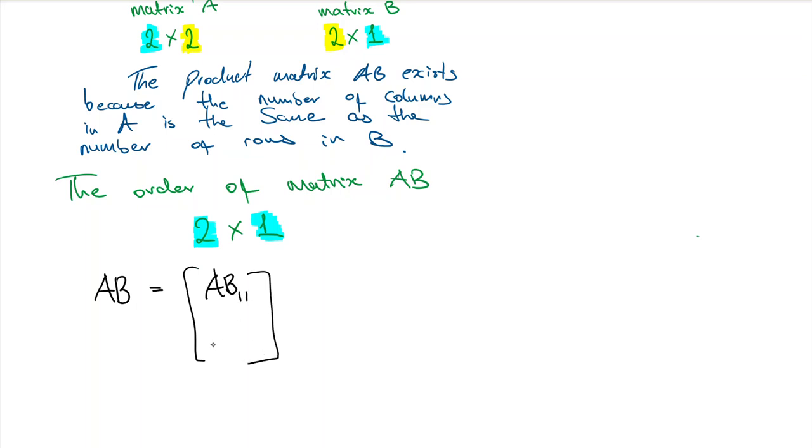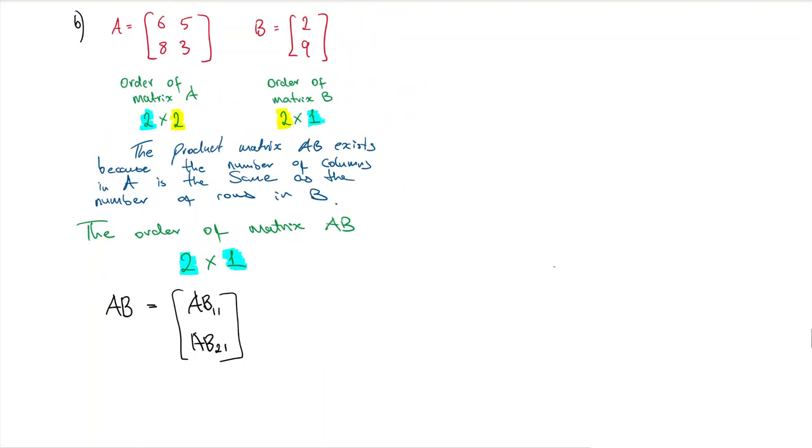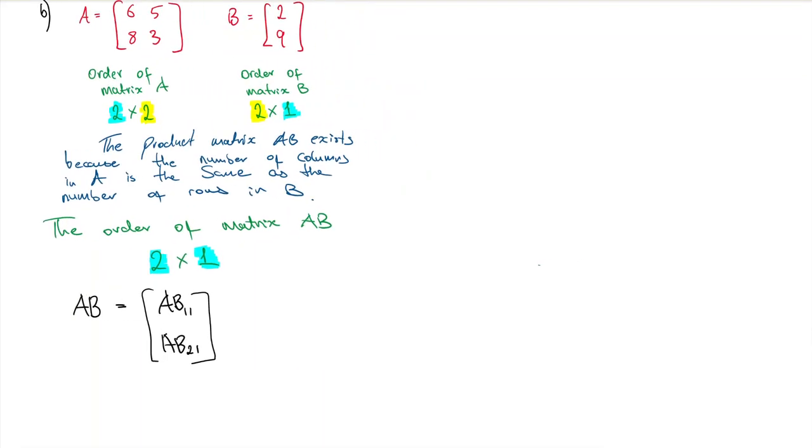I know that I take from row one and B column one, so that's 6 times 2 plus 5 times 9.